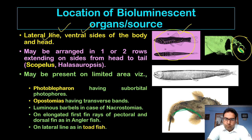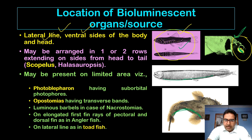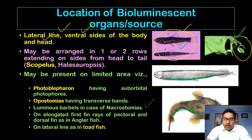To summarize: in Scopelus the bioluminescence extends from head to tail; in Photoblepharon it is at one point just below the eye; in Opostomias it appears as a transverse band; in Neostomias it takes the form of barbels; in the anglerfish it is the elongated first fin ray; and in the toadfish it is on the lateral line.